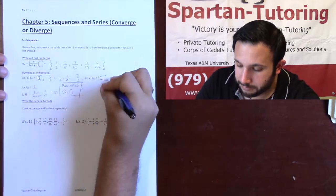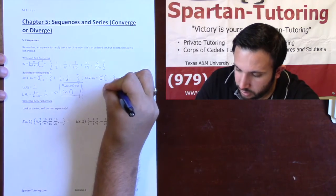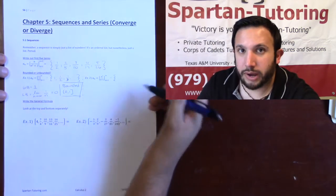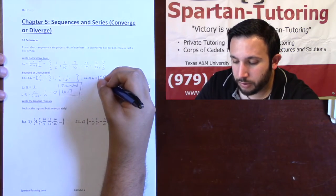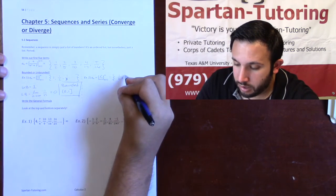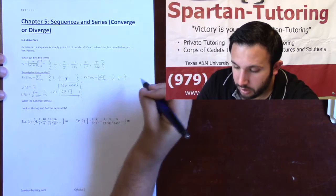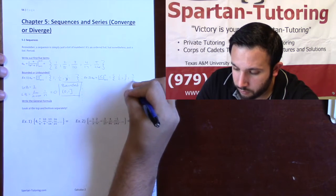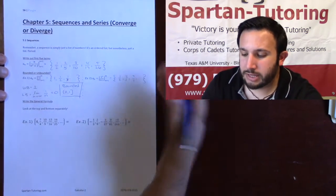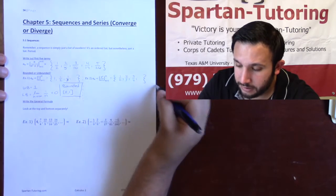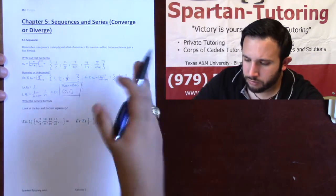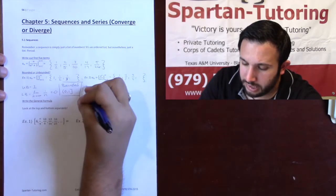For the second example, say I have n²/(n+1). Again I'll write out the first few terms: plugging in 1 gives 1/2; plugging in 2 gives 4/3; plugging in 3 gives 9/4, and so forth. I need to recognize whether my sequence is getting bigger or smaller, and it's definitely getting bigger — going from 1/2 to a little more than 1 to a little more than 2.